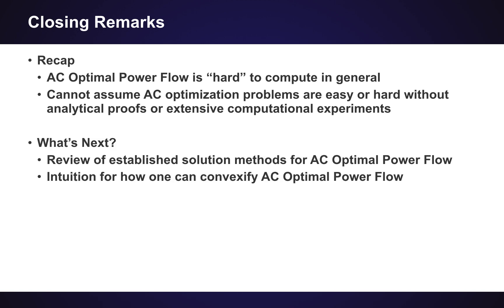So then getting to what is coming next here, we are going to look at a review of established solution methods for AC optimal power flow - essentially how do we traditionally solve these non-linear optimization problems with non-convex constraints. Then we are going to provide an intuition for how it is possible to convexify the AC optimal power flow. If we were able to convexify this AC optimal power flow, then we should be able to get back into this easy class of problem. And that's the main motivation - you want convexity because then you can use this convexity for fast algorithms.